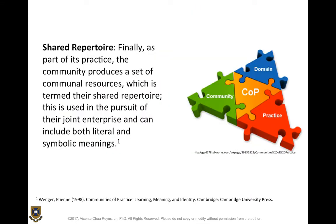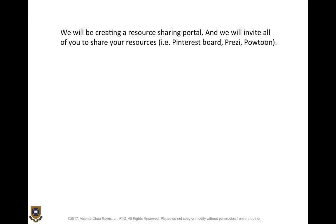The third characteristic of a Community of Practice is referred to as shared repertoire. The community produces a set of communal resources termed a shared repertoire, used in the pursuit of the joint enterprise, and it can include both literal and symbolic meanings. At this stage, working on two iterations with your group and now undertaking the third by completing the Pow2 — previously you did the Pinterest board and the Prezi — you would have already accumulated knowledge about each other to tap on a shared repertoire. For our course, we will actually live up to the idea of a community of practice by creating a resource-sharing portal and inviting all of you to share your resources: your Pinterest board, your Prezi, or your Pow2.